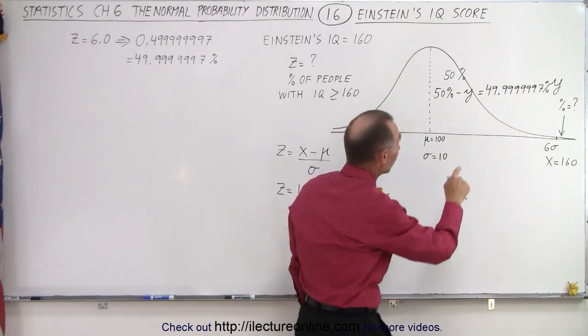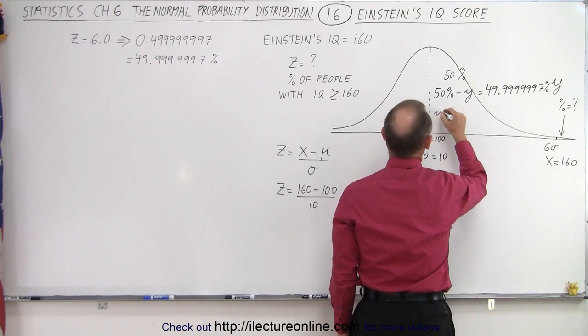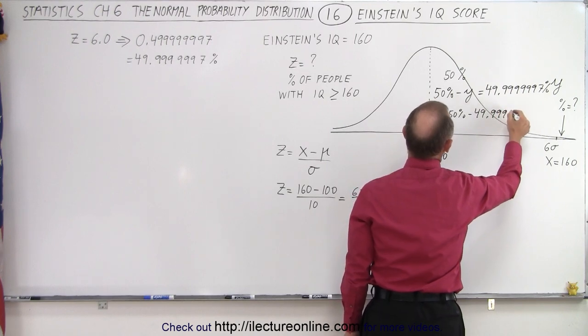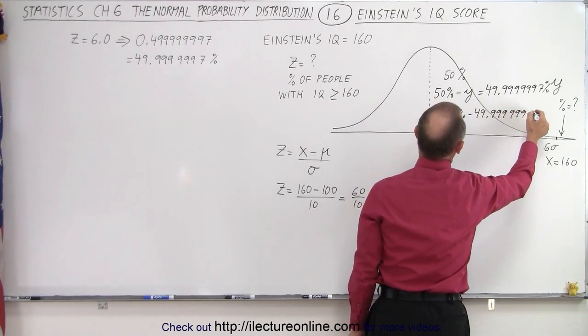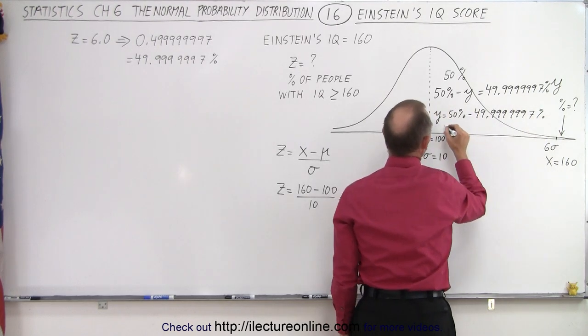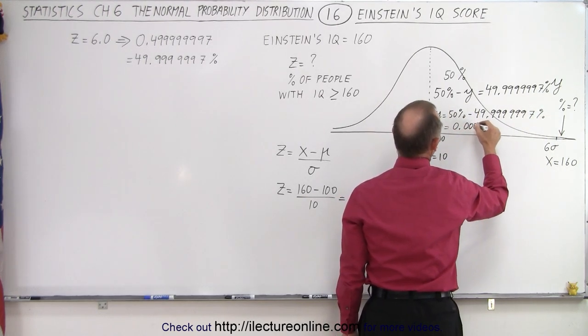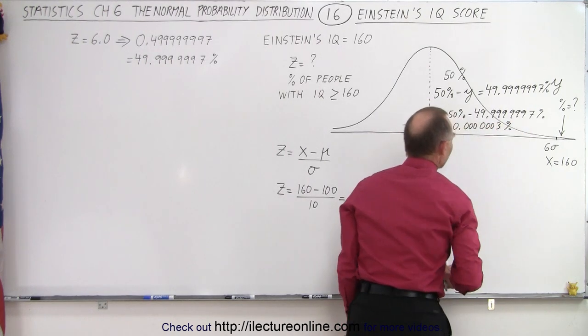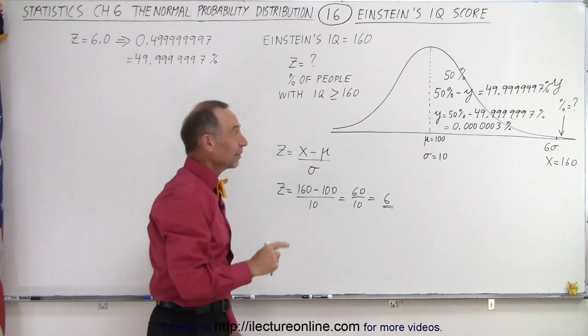Okay, so what is that small little Y here? Well, Y equals 50% minus 49.999999, that would be 7%. And if we do that, that would be equal to 0.00003%. Wow, that's a very small amount.